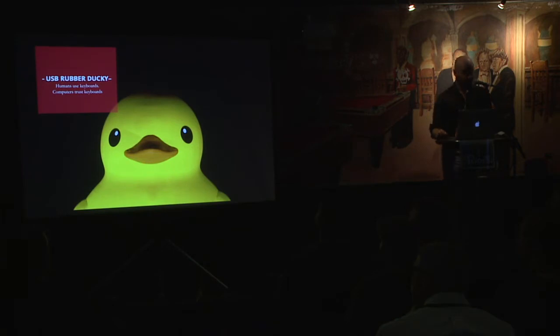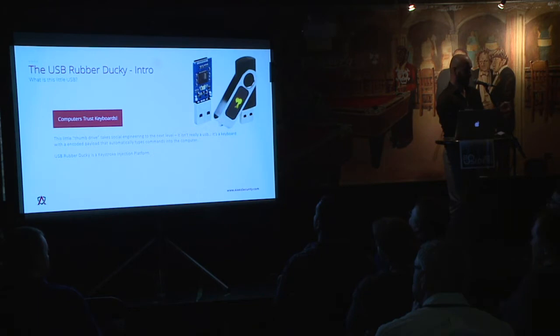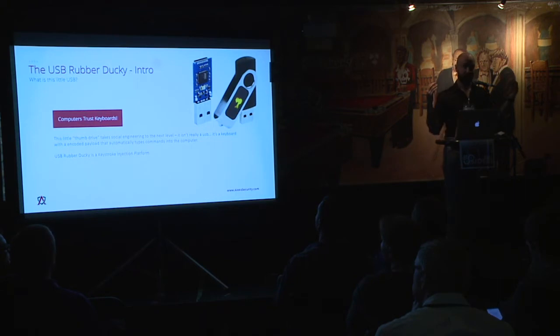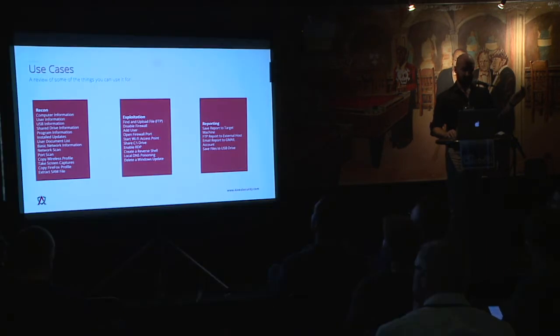The first tool is the USB Rubber Ducky. This device has been around for a while and some of you will know it. The great thing about it is it mimics a keyboard. Computers inherently trust keyboards, but this device has an encoded payload that it types out — I can put in whatever I want. You can use it for reconnaissance: grabbing a computer's ID, computer information, and user information based on where you plug it in.